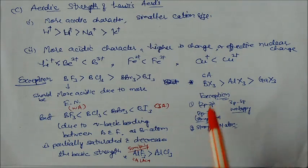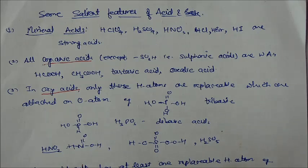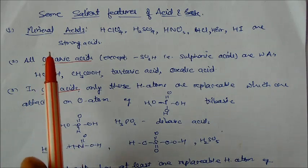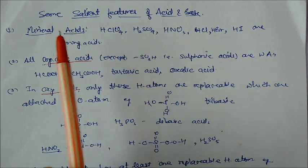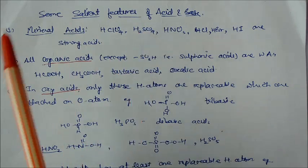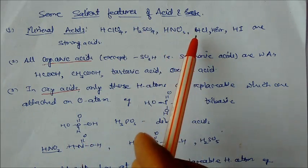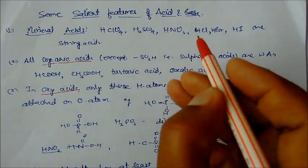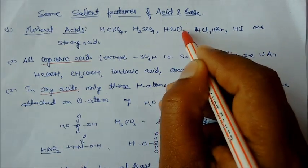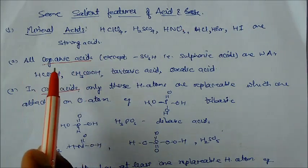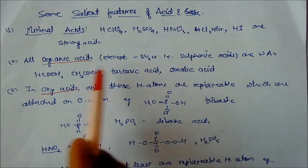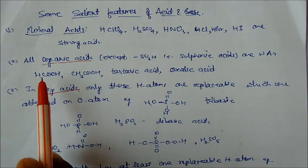These are some regions in which you have to understand. This is answers for these questions. Some salient features of acid and base. Here we will see some important features. Many acids are oxyacids: HClO4 is strong acid, H2SO4, oxyacid of sulfur, oxyacid of nitrogen HNO3, oxyacids HCl, HBr, HI. These are strong acids or strong mineral acids. Similarly, organic acids except sulfonic acid, these are weak acids: formic acid, acetic acid, tartaric acid, oxalic acid.